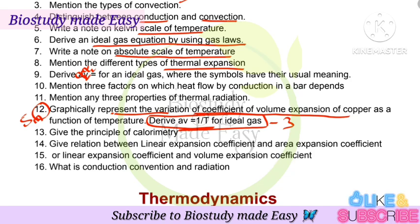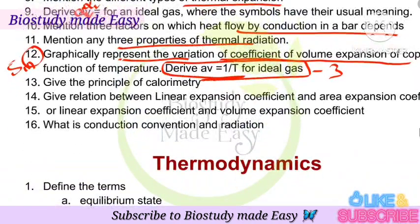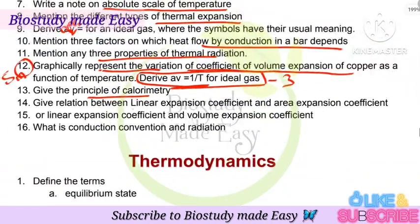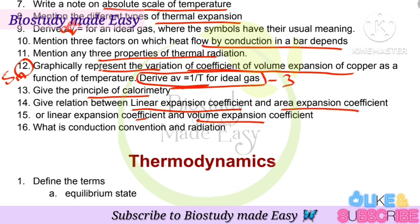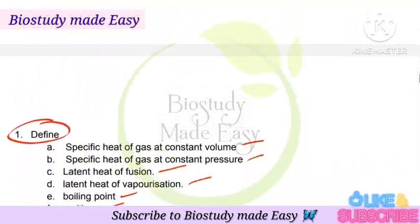Three factors on which heat flow by conduction depends. Three properties of thermal radiation. Principle of calorimetry. Relation between linear expansion coefficient and area expansion coefficient, or linear expansion coefficient and volume expansion coefficient. Conduction, convection, and radiation. These are the important questions from the Thermal Properties of Matter chapter.